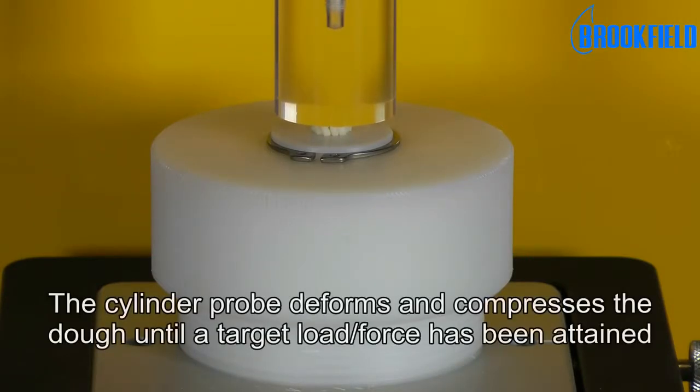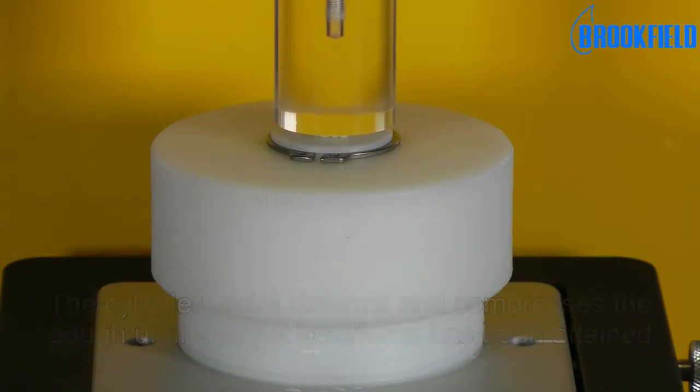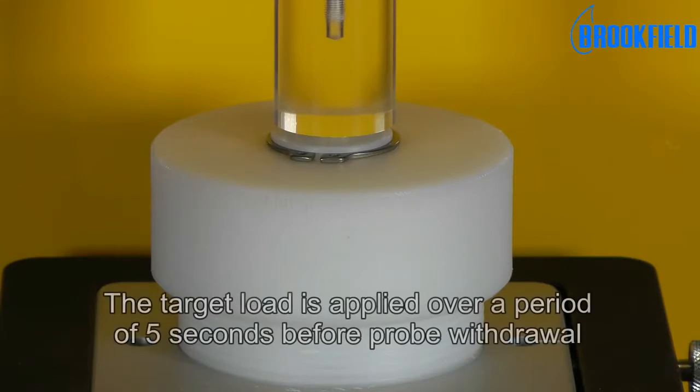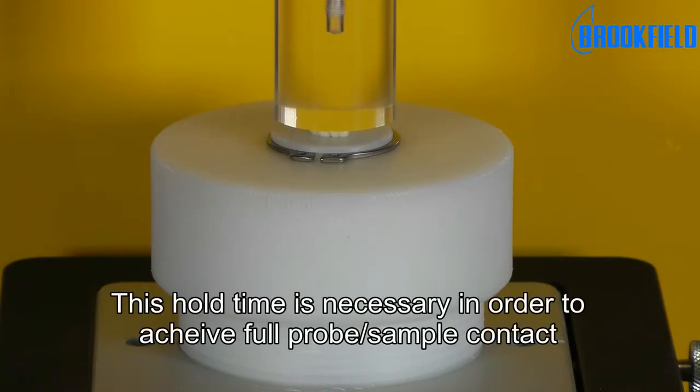The cylinder probe deforms and compresses the dough until a target load has been attained. The target load is applied over a period of 5 seconds before probe withdrawal. This hold time is necessary in order to achieve full probe sample contact.